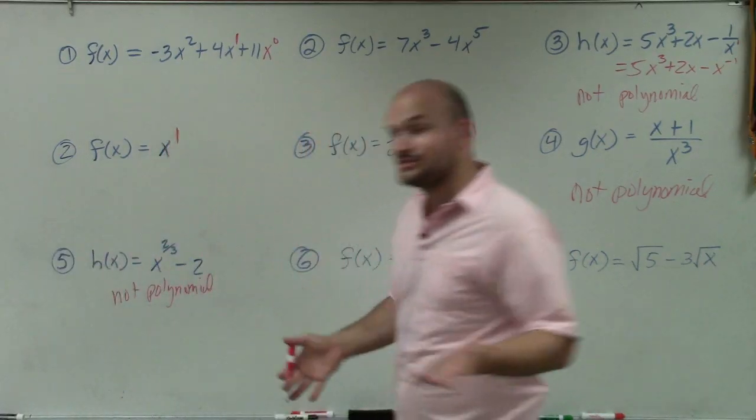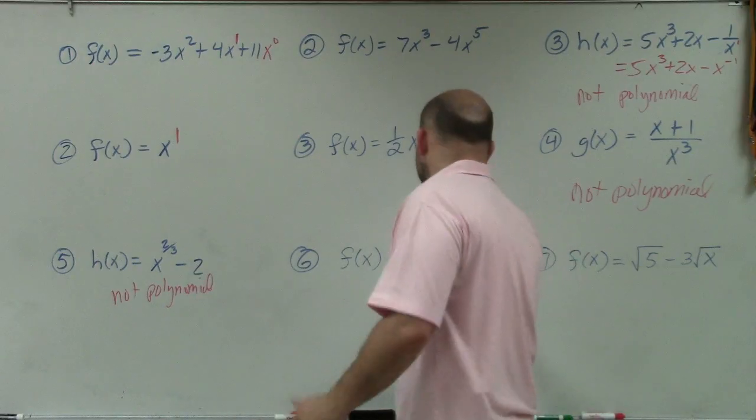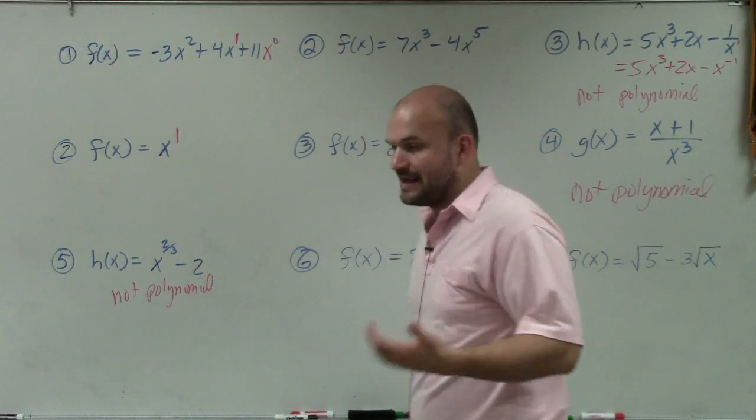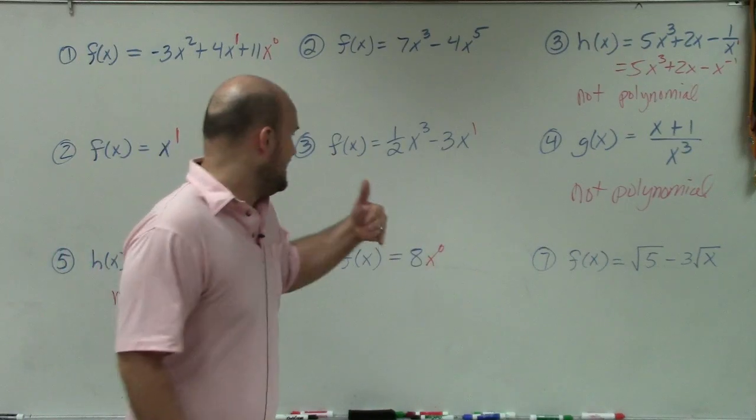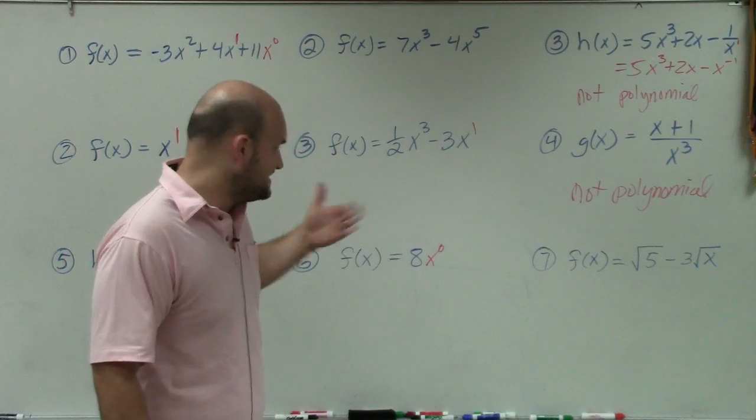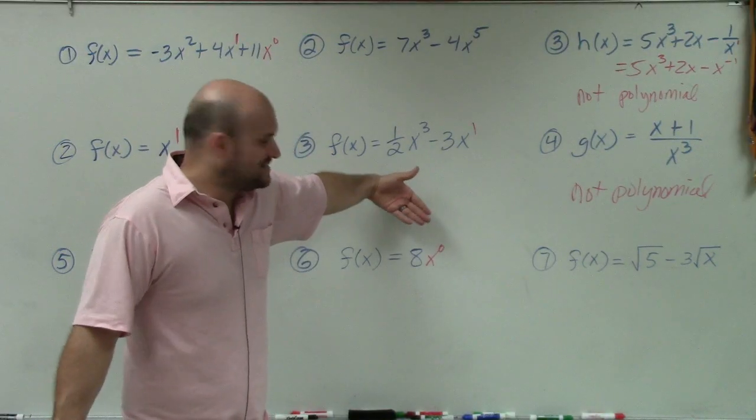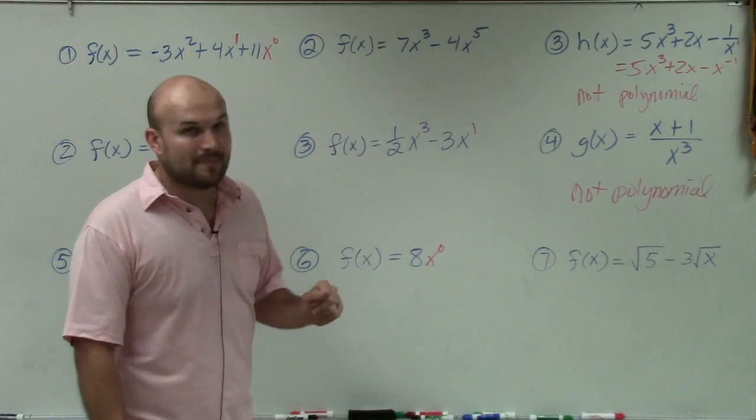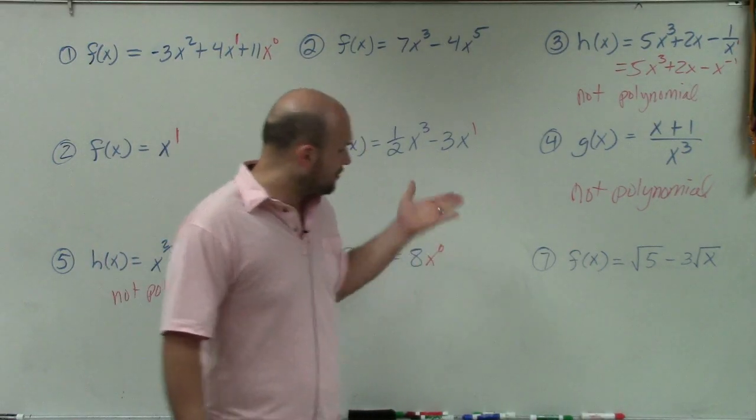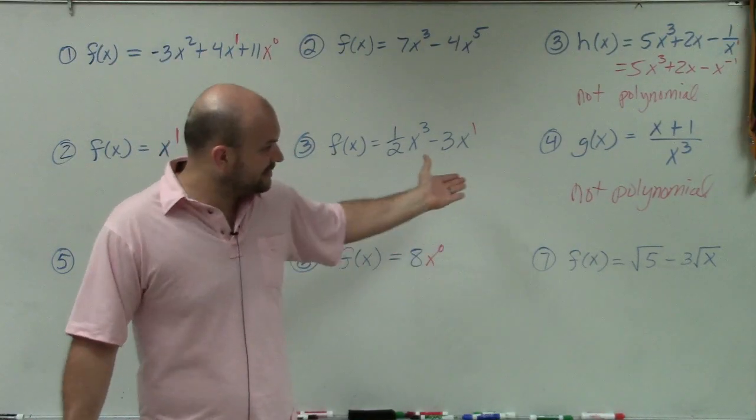Now, this one gets a lot of students, f of x equals 8. This is a polynomial because you could still have a variable in here, just x to the 0 power. Well, 0 is an integer and it's not negative or positive, so it's not going to fall into being negative. Therefore, this would be a polynomial because the power is going to be 0, it's non-negative, and it's also an integer.